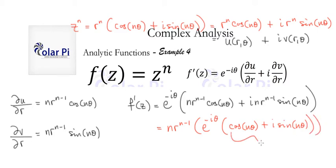what we've said already, and from what you know, this here, cosine n theta plus i times sine n theta is e to the i n theta. So let's backtrack and write it as such. So we've got this times e to the i n theta.